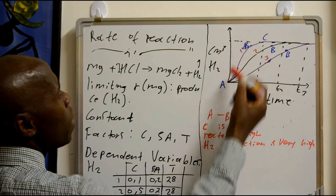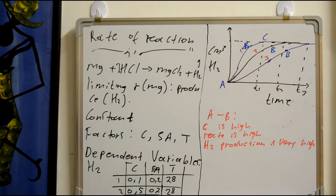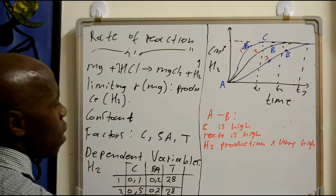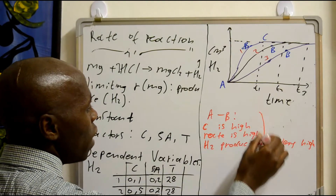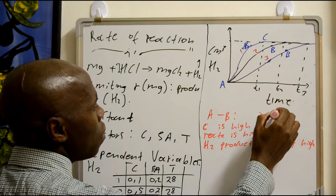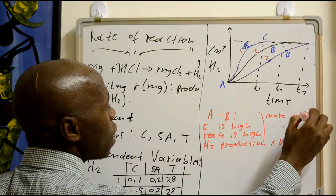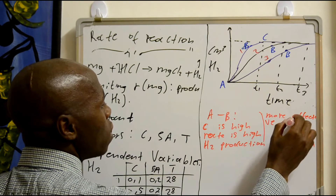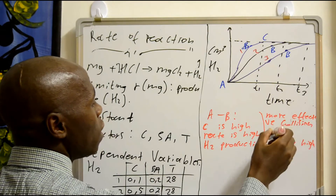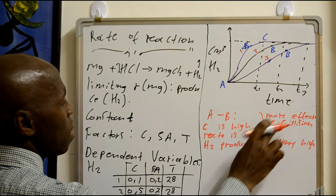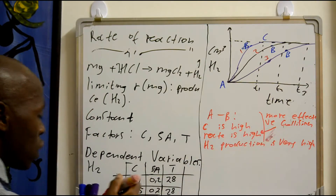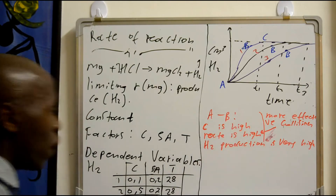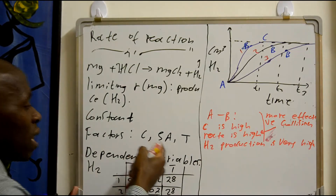Zone 2 is the reaction from A to B — the concentration near reactions as a factor is very, very high at those points. By high concentration, we know there will be more particles. Then those particles will collide effectively. Then there will be more effective collisions. More effective collision means the reaction rate is so high. The entire high production of H2 is very high.